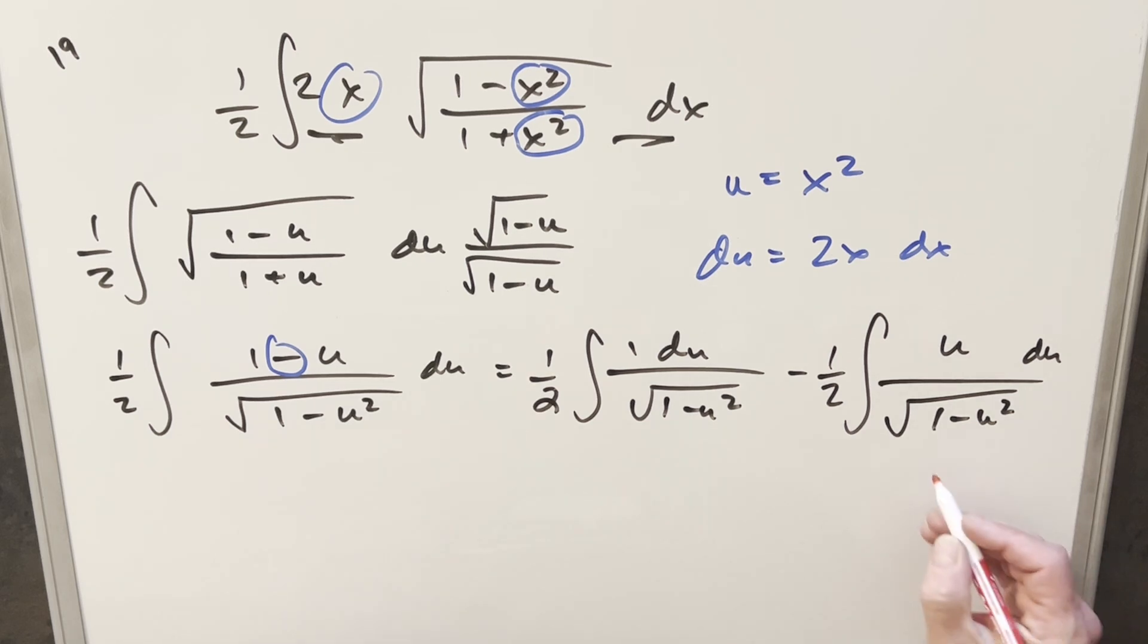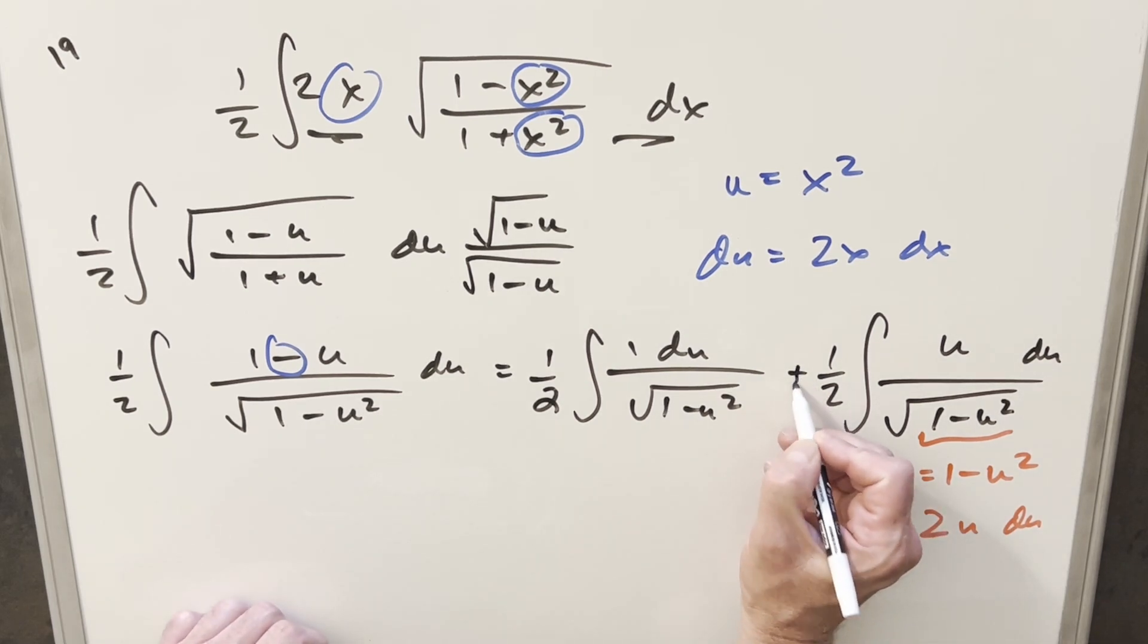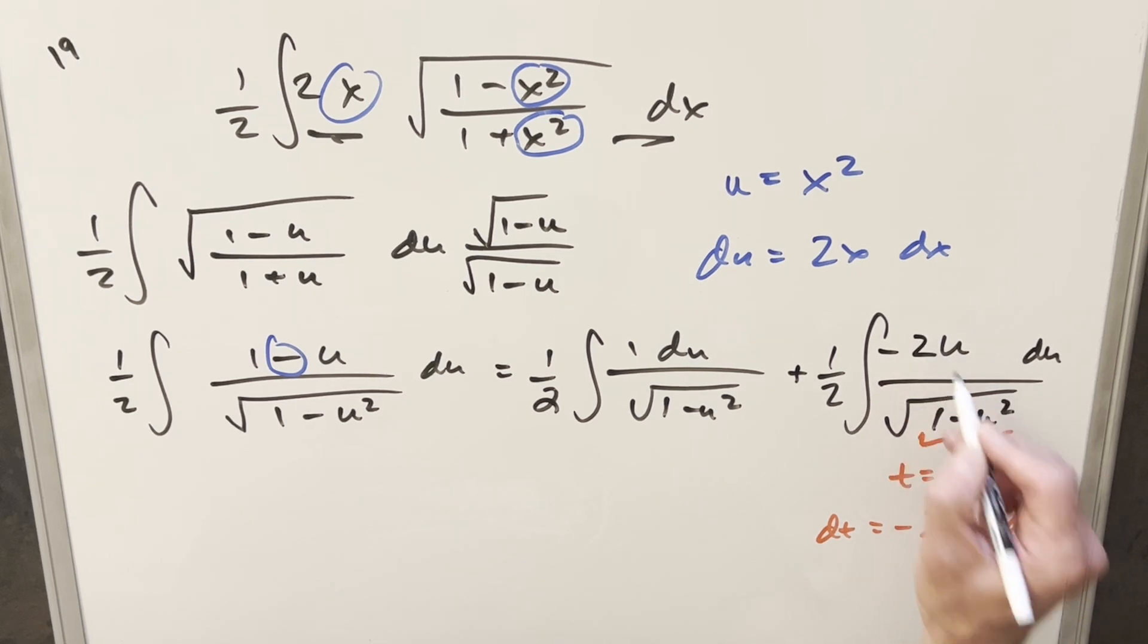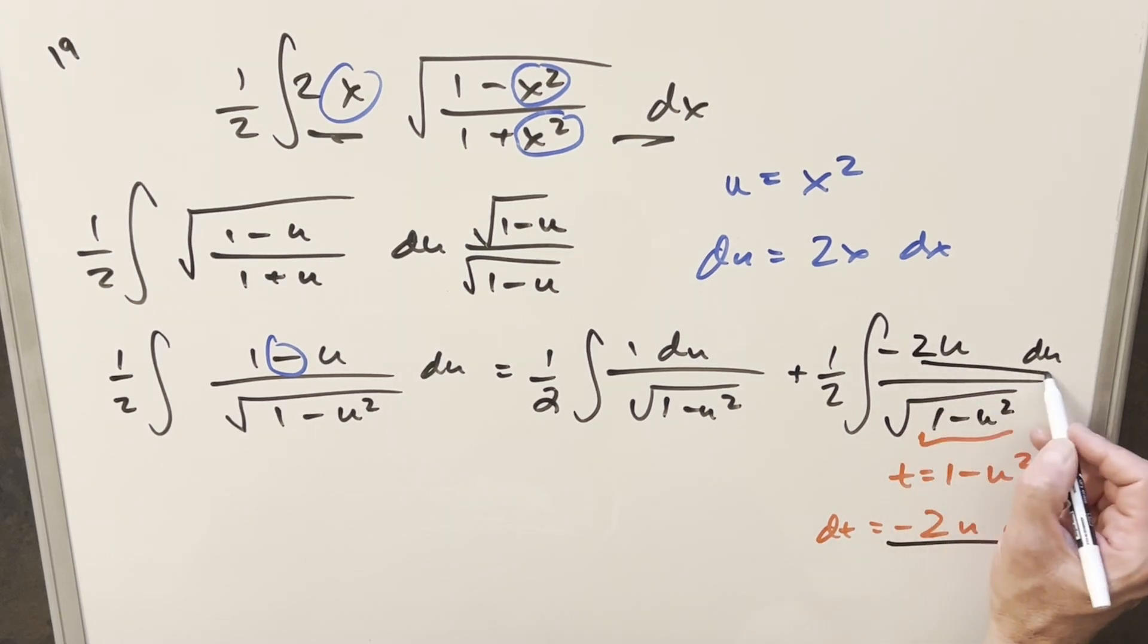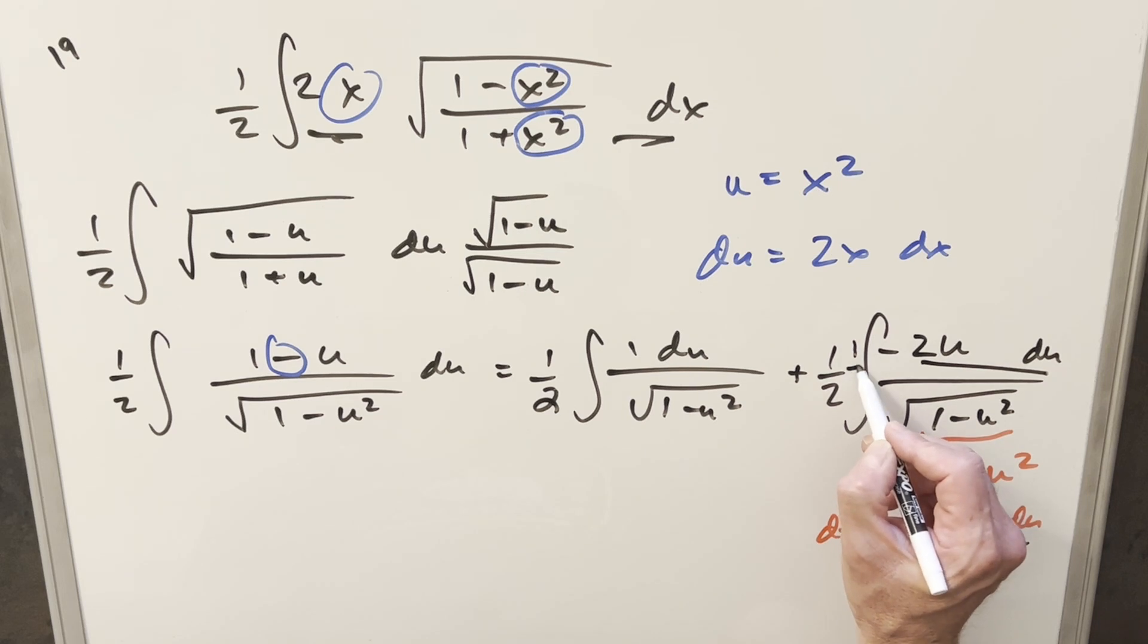Now for this here, I can simplify this with another substitution. I'll substitute for all this. We'll set t equal to 1 minus u squared. Take a derivative. Dt is going to be minus 2u du. So in order to set this up, let's bring the minus sign inside here. Then we want to create this 2. If I multiply it by 2, then we have this exactly here. I don't want to change it, so let's multiply by another 1 half out in front.